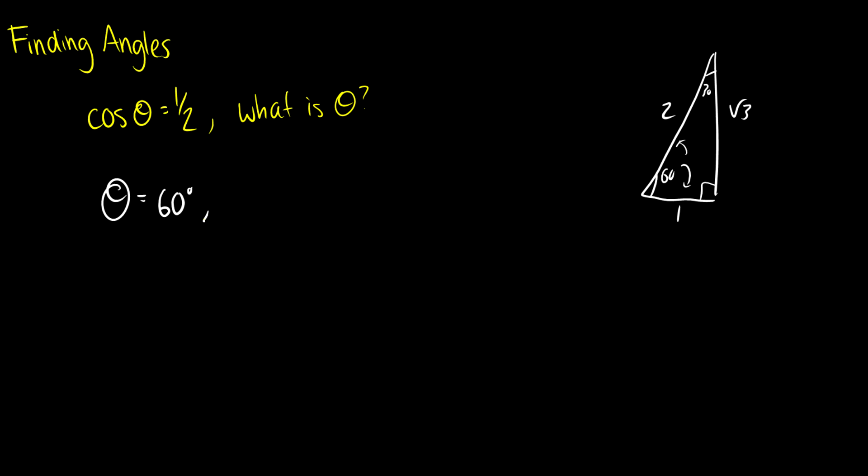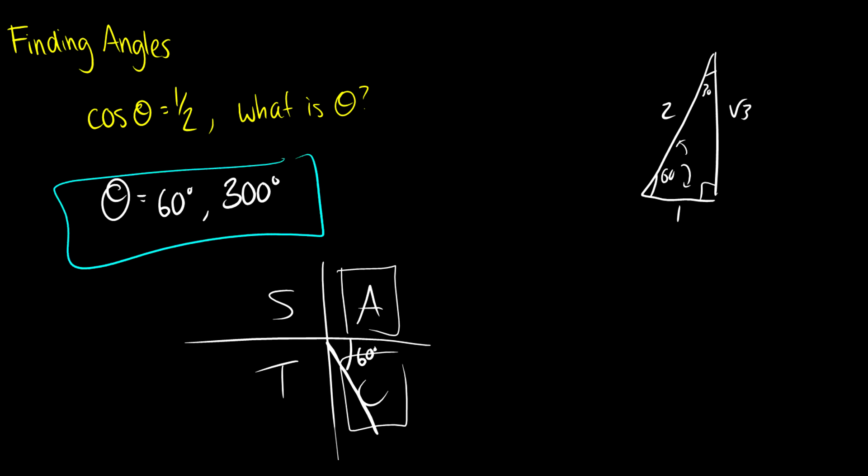So theta is equal to 60 degrees, and if we remember our chart here for where is cosine positive, we see it's positive in the first quadrant and it's positive in the fourth quadrant. So where is the reference angle going to be in the fourth quadrant of exactly 60 degrees? Well that is going to be when theta is 300 degrees. So each question here is going to have two values. It's going to have one in one quadrant and another in a different quadrant. So you have to draw out your CAST diagram as well as your triangle that's going to be required to solve the question.